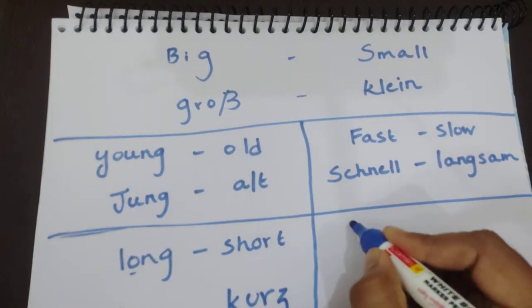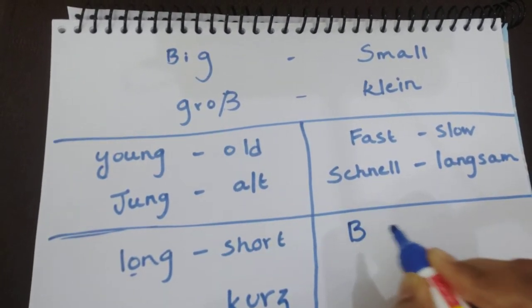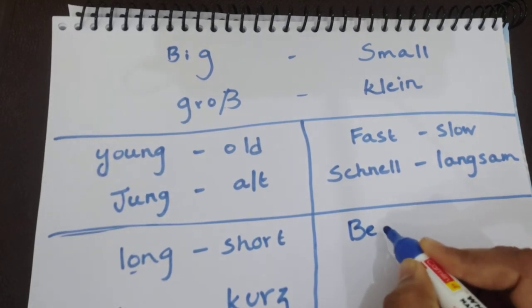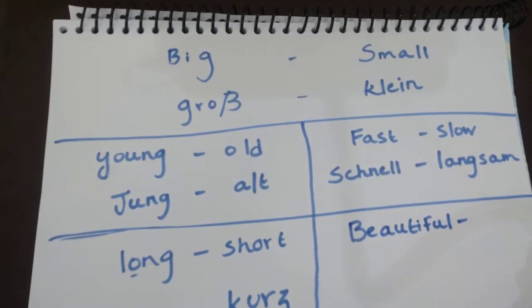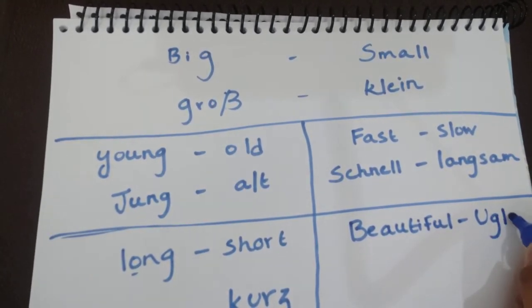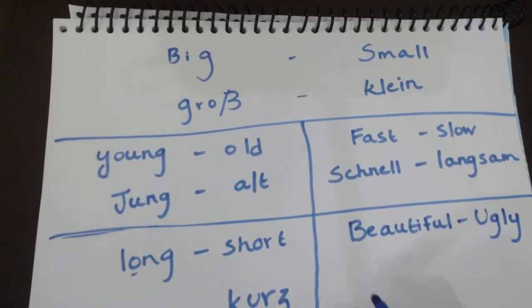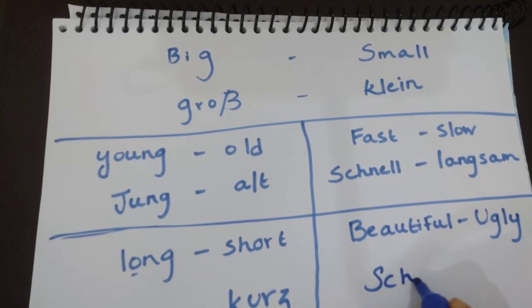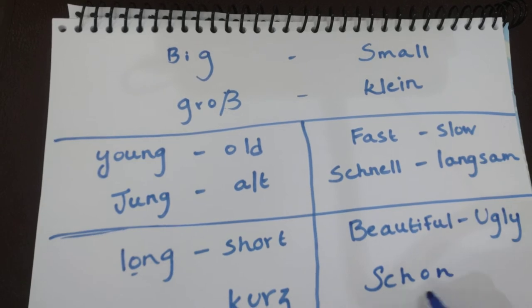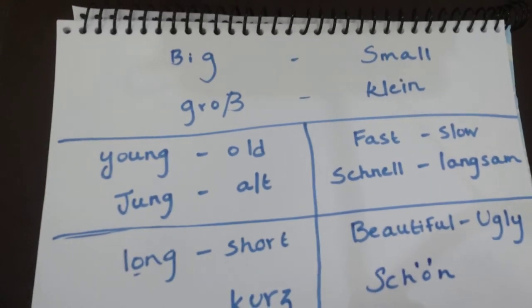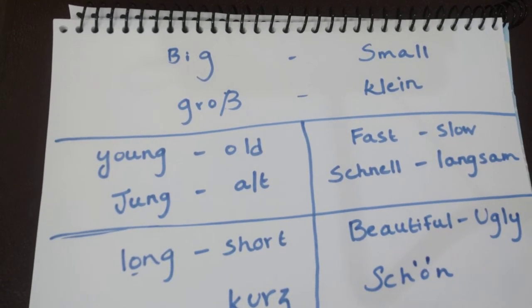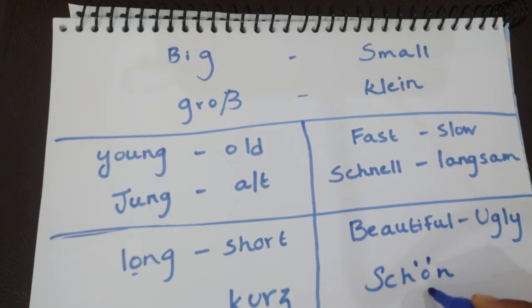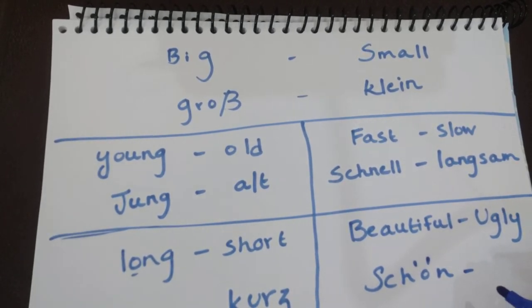So next: beautiful and ugly — opposites. In German, beautiful is 'schön' and ugly is 'hässlich'. Note that the pronunciation can be different depending on the context.